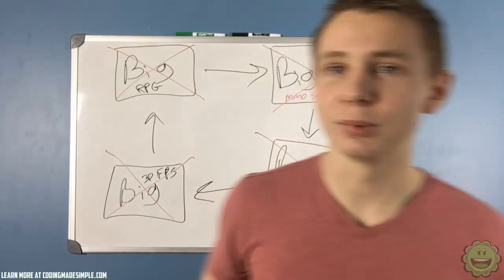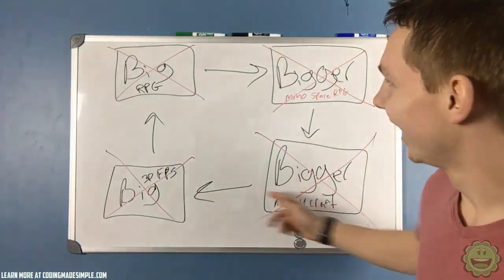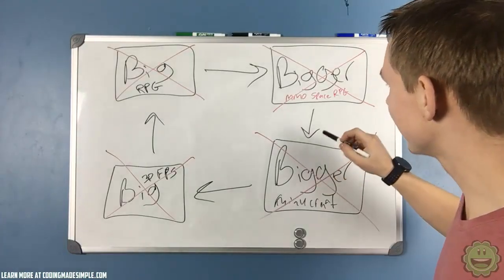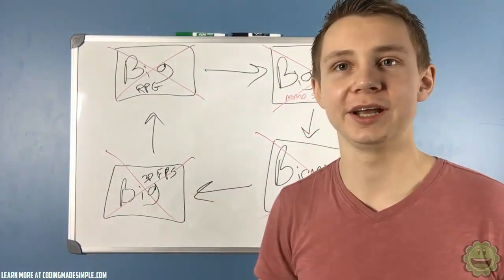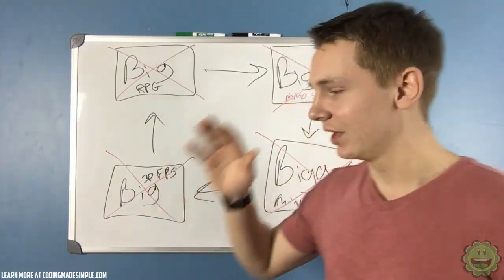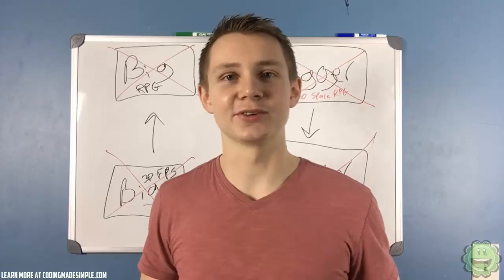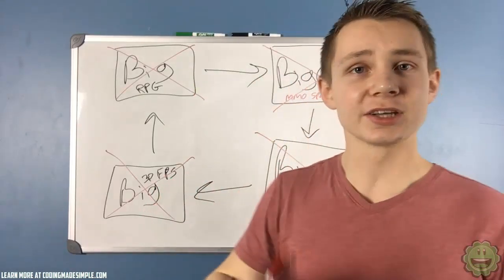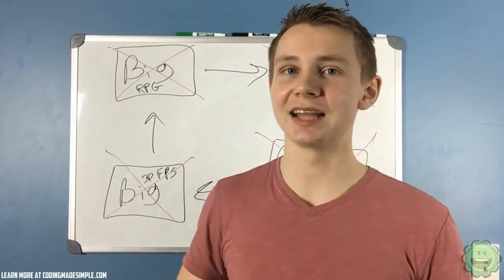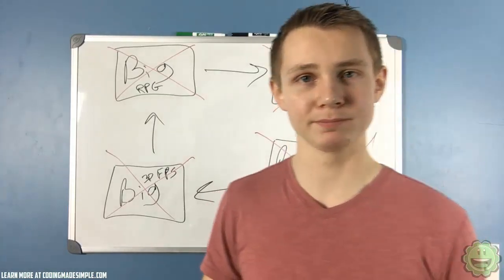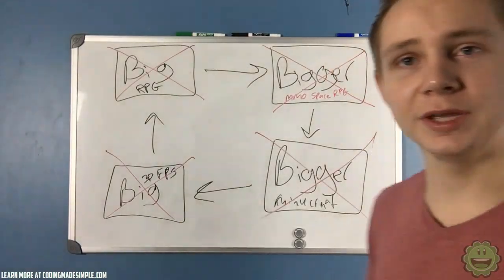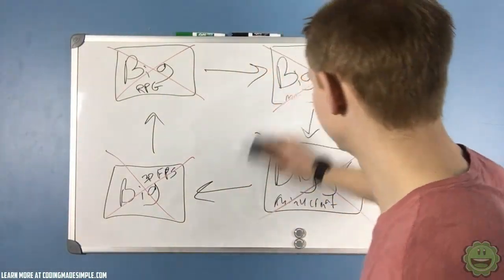And you get a complete circle and this circle will continue over and over again. You say you know what, I don't like the Minecraft or the MMO, it didn't work out. Let's go back to the 3D FPS and it continues on and on and on. So how do we stop this cycle? Some of you guys may not be in this cycle which is cool, but I've seen a lot of people that are and that's why I want to make this video.